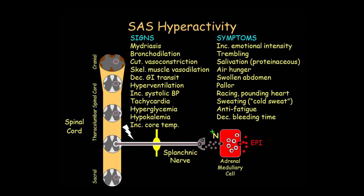Hyperactivity of the sympathetic adrenergic system produces many signs and symptoms. Signs include dilated pupils, vasodilation in skeletal muscle, increased heart rate and glucose levels, and decreased serum potassium. Symptoms include increased emotional intensity and trembling, pallor, a racing and pounding heart, sweating, an anti-fatigue effect, and decreased bleeding.